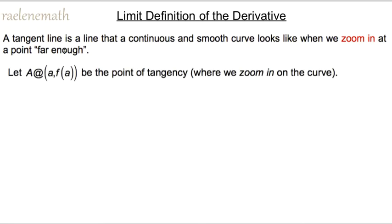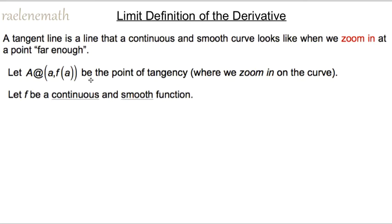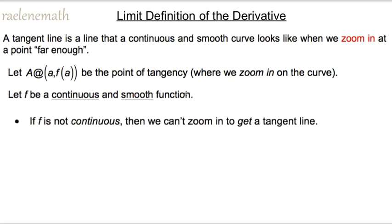If we let A be the point of tangency where we zoom in, and we have that the function F is continuous — no holes, jumps, vertical asymptotes, or oscillations — and the graph has to be smooth — no corners or sharp abrupt turns — then we will have a derivative.